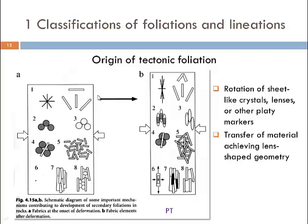This illustration from Passchier and Trouw's textbook explains the main foliation-forming processes in rocks. All of them have in common that either sheet-like crystals or lenses rotate into a uniform orientation and therefore define a foliation. A foliation is the alignment of markers — typically minerals, most commonly platy sheet-silicate minerals — in a uniform orientation, achieved through some process of rotating them into that direction.